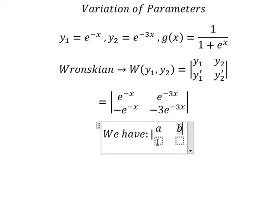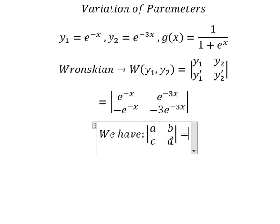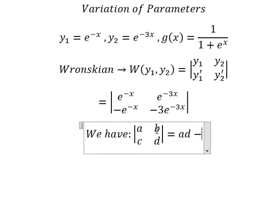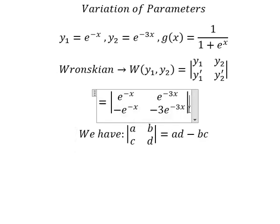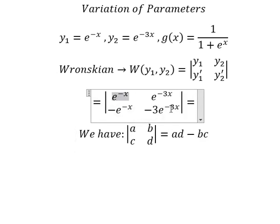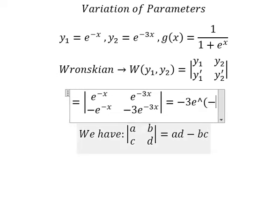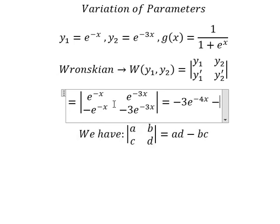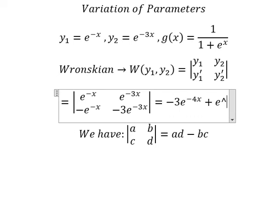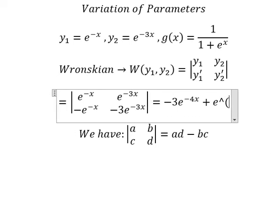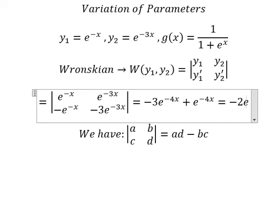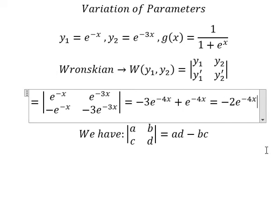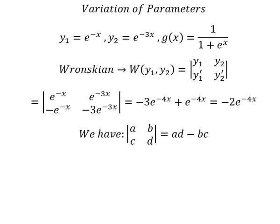Now we compute the determinant of the matrix using the formula a·d minus b·c. So we have negative three e to the power of negative four s, minus the product of the off-diagonal terms. The two negatives give a positive, and we get e to the power of negative four s. After simplifying, the Wronskian result is obtained.